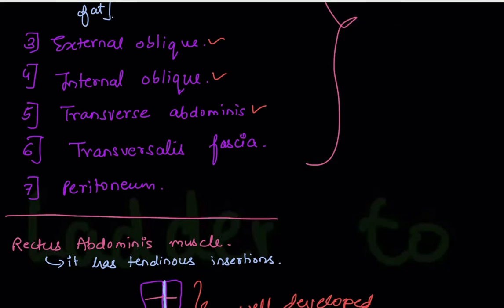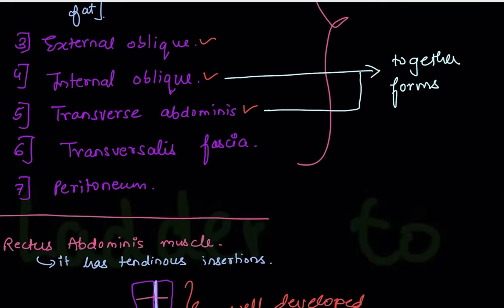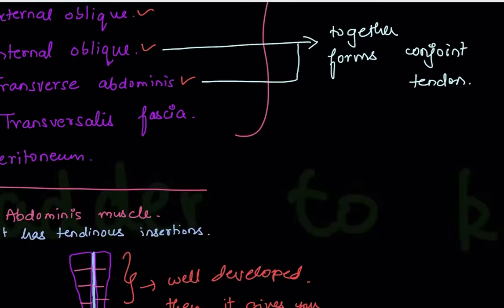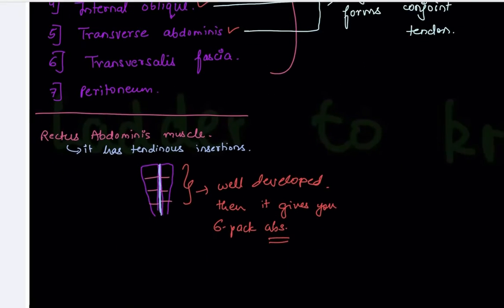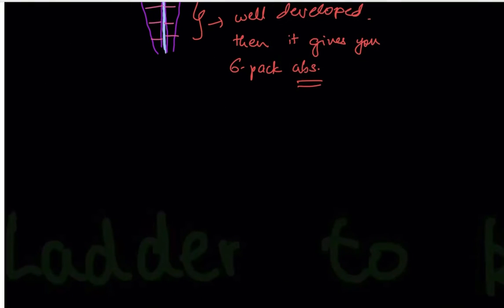The internal oblique and transverse abdominis muscles together form a conjoint tendon — that's all you need to remember for these two muscles. One more very important thing: there is something called the rectus sheath.